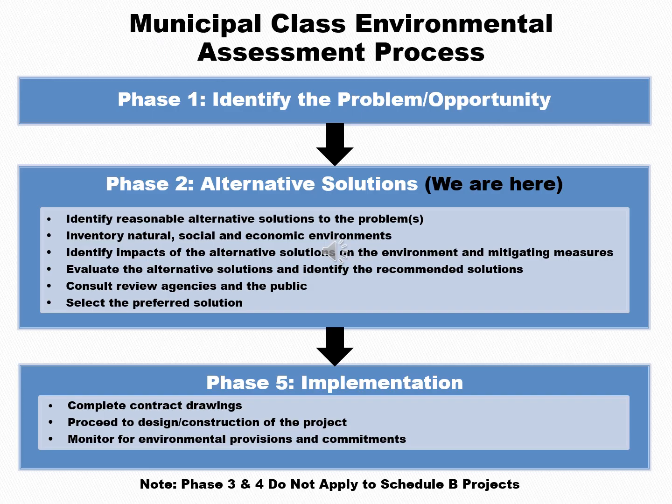The Municipal Class Environmental Assessment Process. Phase 1: Identify the Problem or Opportunity. Phase 2: Alternative Solutions. We are here. Steps in Phase 2 include: identify reasonable alternative solutions to the problem; inventory natural, social and economic environments; identify impacts of the alternative solutions on the environment and mitigating measures; evaluate the alternative solutions and identify the recommended solutions; consult review agencies and the public; select the preferred solution. Note that Phase 3 and Phase 4 do not apply to Schedule B projects, so on this project we will jump from Phase 2 directly into Phase 5, Implementation.